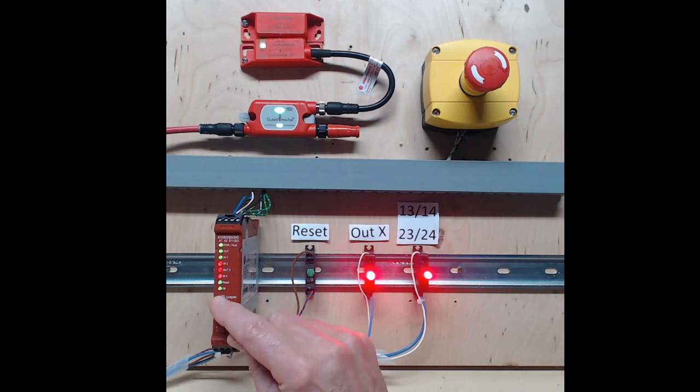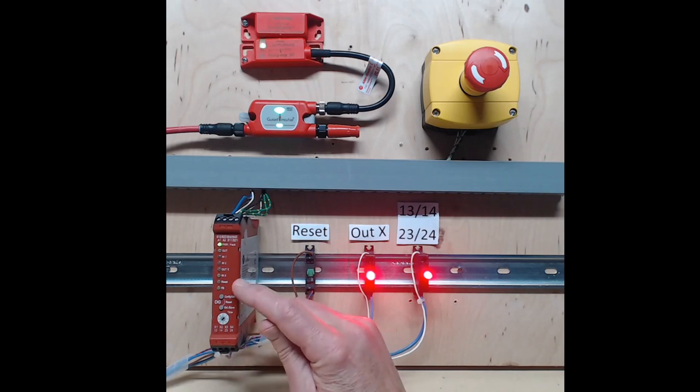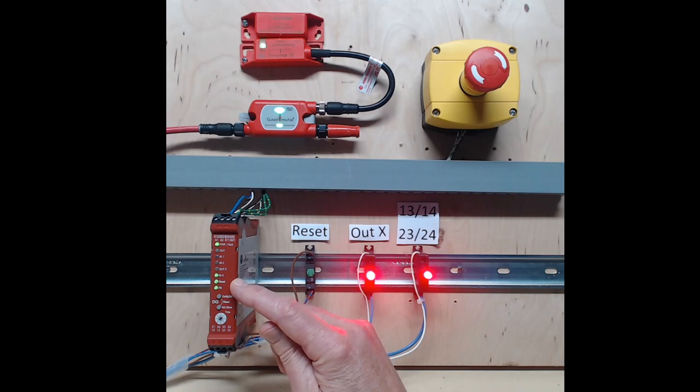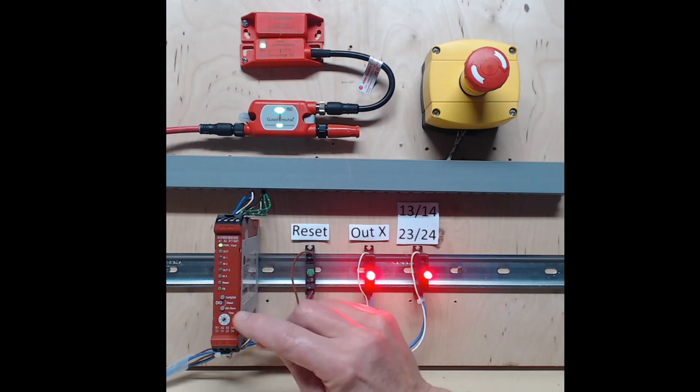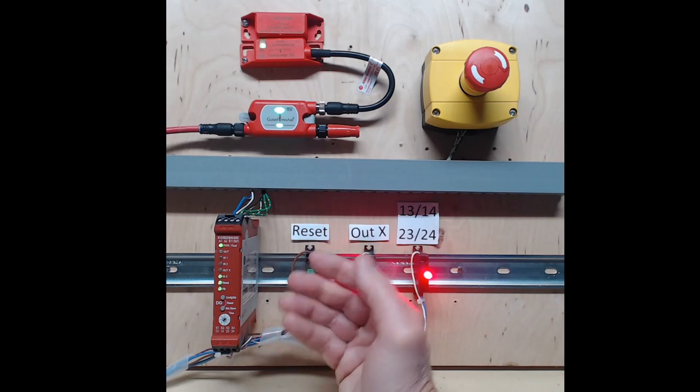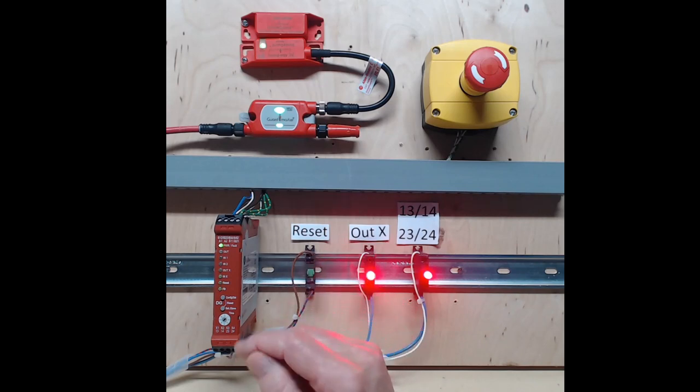I short press the config set button again to reveal the time delay setting. The number of times the bottom three indicators blink is the setting of the delay switch. In this case, the indicators blink twice because the delay is set to two. If the delay was set to zero, there would be no indicators blinking. Now, short press one more time, and the LEDs revert back to showing the operational status.